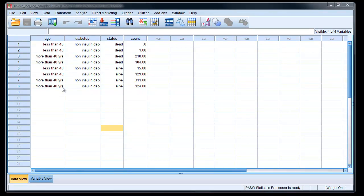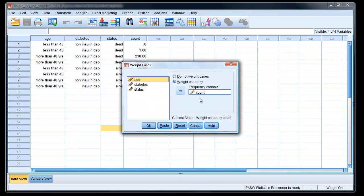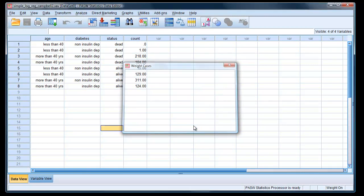Here we are in the data. First of all, we check that we've got the weighting variable on. So we go to Data, Weight Cases. And yes, we have the frequency variable as count, which is correct. So we can just cancel that.